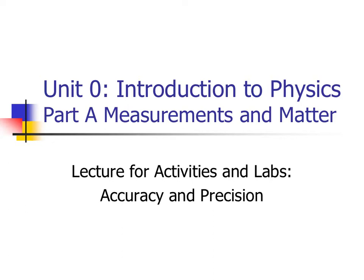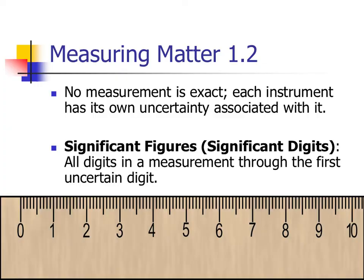Yesterday's activity had you making approximations and then some measurements, and we'll use those as examples going forward. First off, we have to understand that no measurement is exact. Even if we measure twice, we're going to find that each measurement has a certain amount of uncertainty — it's not going to be super spot-on. That brings us to a topic most people had in ninth grade: significant digits, or significant figures — sometimes shortened to sig figs.